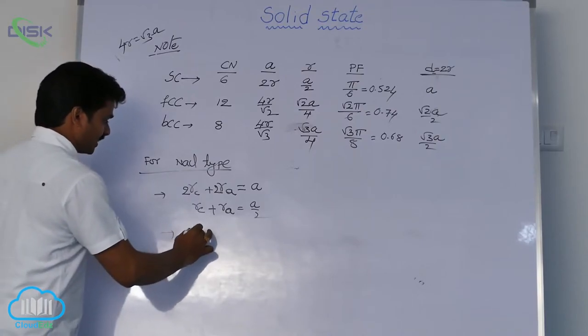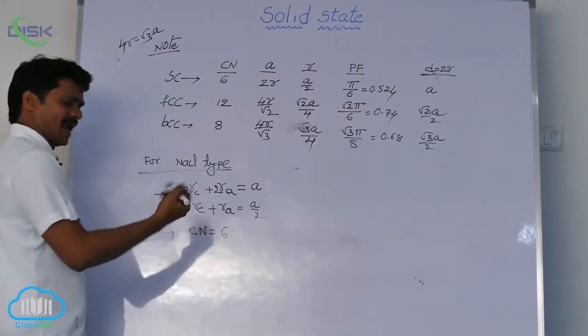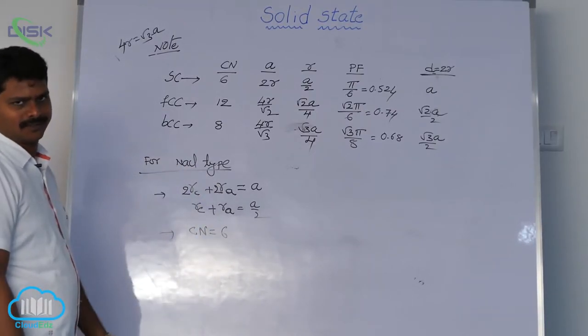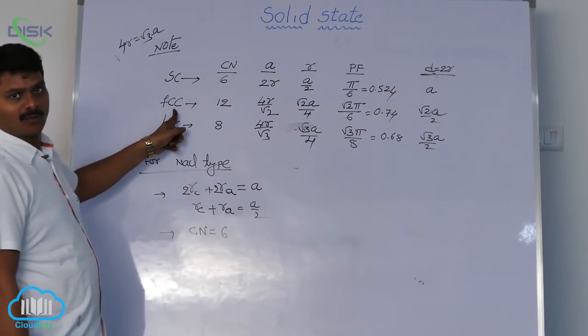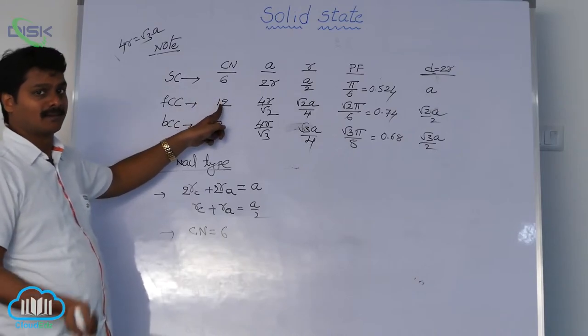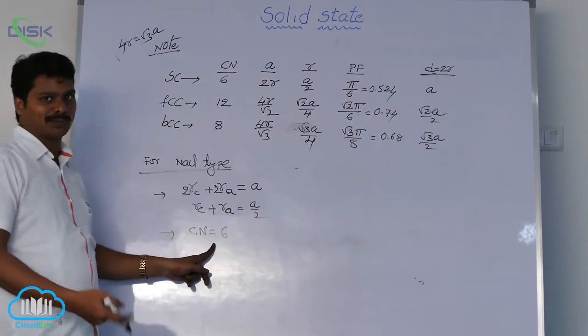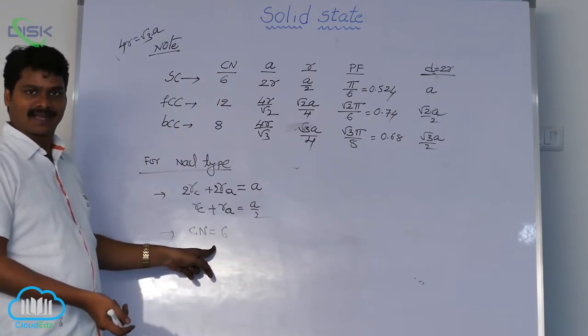Similarly, in this coordination number is 6 for cation or anion, for both, coordination number is 6. But in FCC geometry, what we have discussed is coordination number 12, but here 6 only. It is a different kind of structure.